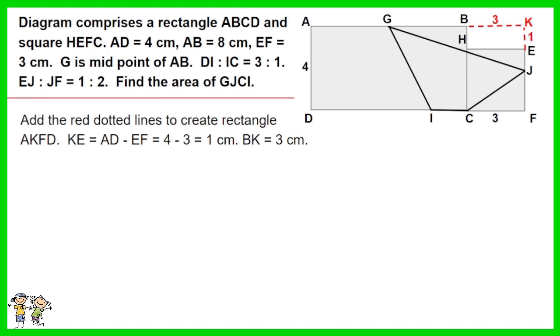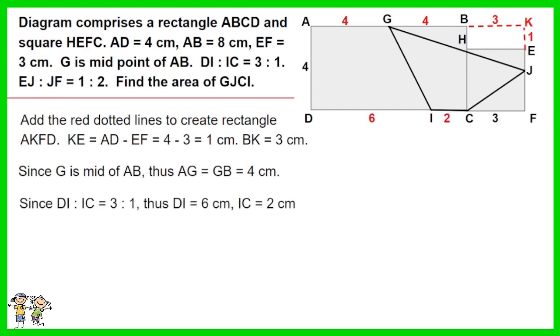Add the red dotted lines to create rectangle AKFD. KE equals AD minus CF, which is equal to 4 minus 3 equals 1 cm. BK equals 3 cm. Since G is mid of AB, thus AG equals GB equals 4 cm. Since DI to IC ratio is 3 to 1, thus DI equals 6 cm, IC equals 2 cm.